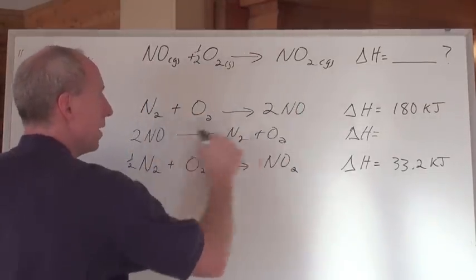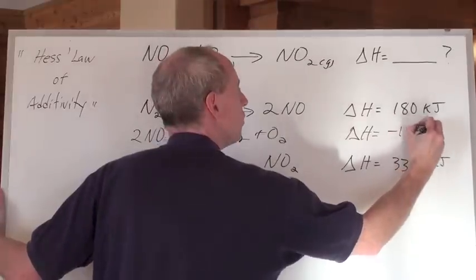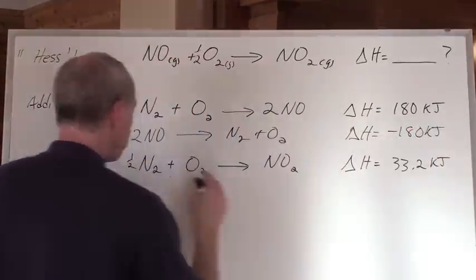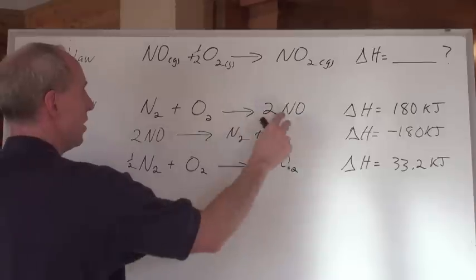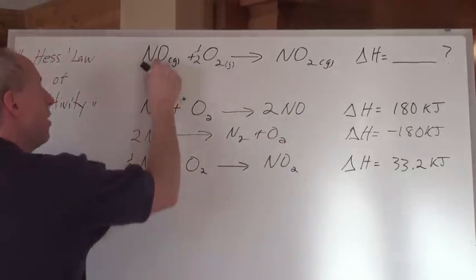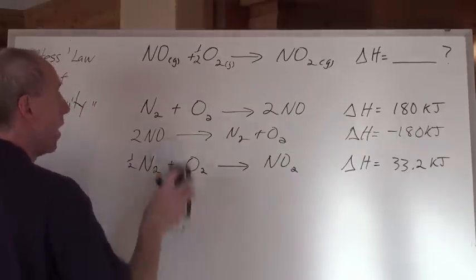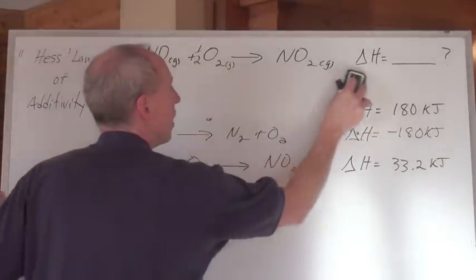So, a reaction that was endothermic now becomes exothermic. Now, that equation is just this one in reverse to get the NO's on the proper side. Hey, guess what? I'm done with this equation, so I erase it. You either, on your piece of paper, you put a line through it and you say, I'm done with that one, or you just erase it.